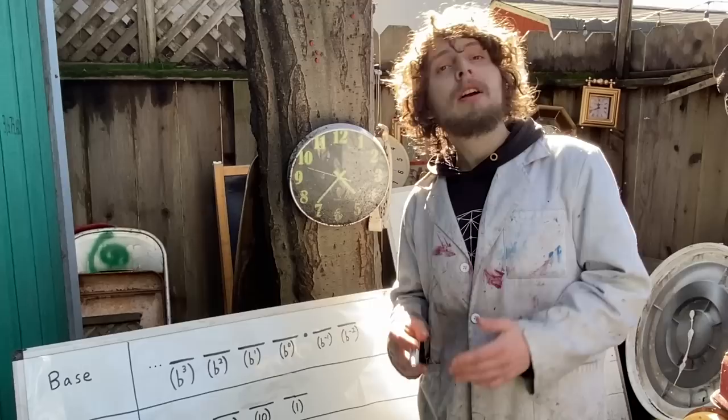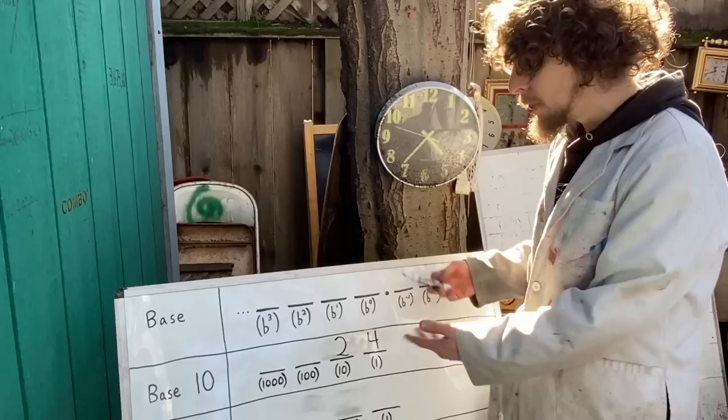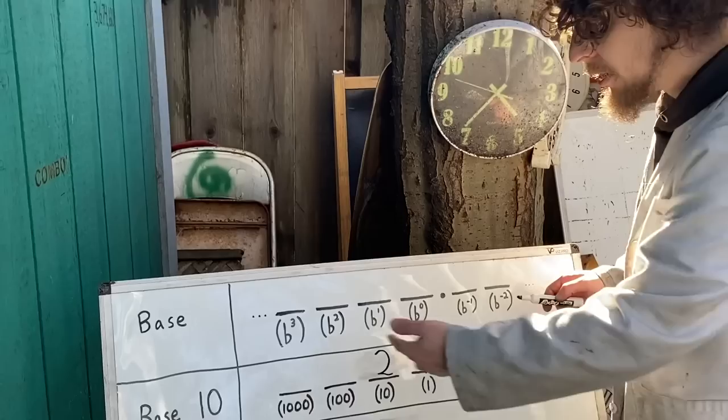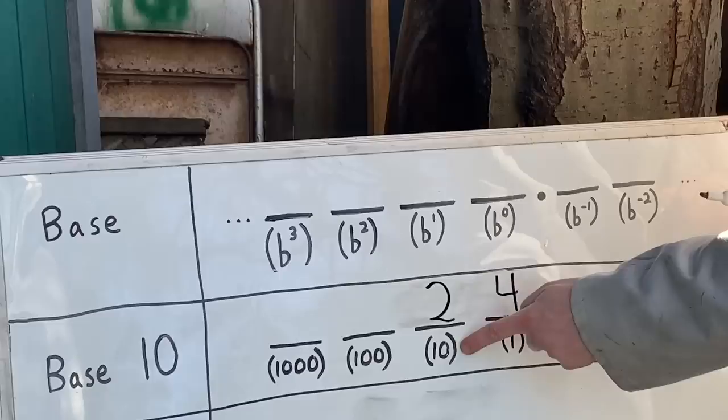You're probably used to writing two dozen of a thing as a 2 followed by a 4. Because we count in a base 10 system, where each spot in our number is how many of a given power of 10 we want. And 10 to the 0th power, which is this first spot, is 1. So we get four 1s, and then add in 2 of the 10 to the first powers.